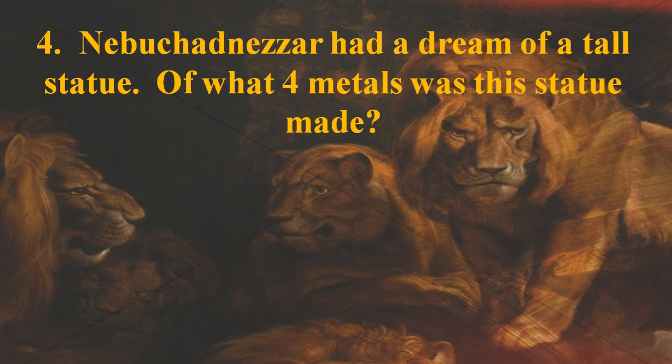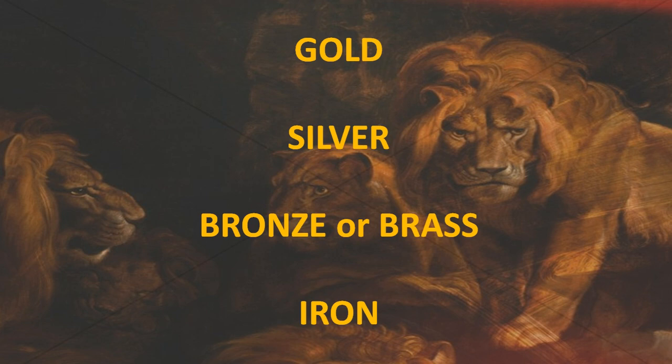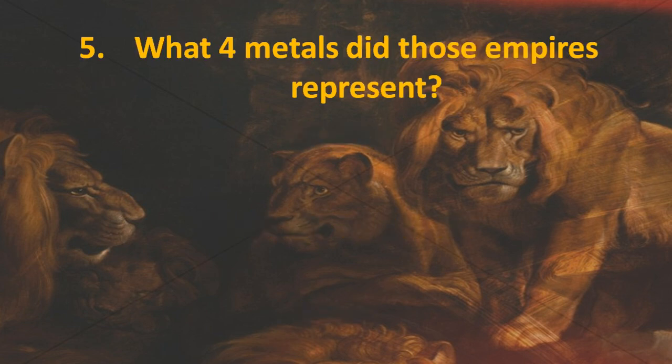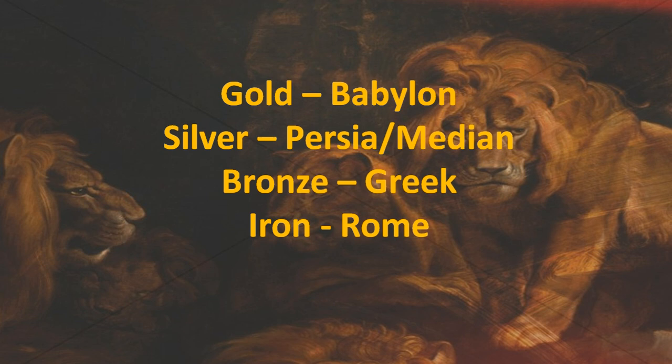Number four: Nebuchadnezzar had a dream of a tall statue. Of what four metals was this statue made? Gold, silver, bronze (or brass would be acceptable), and iron. And a follow-up question: what four empires did those metals represent? The gold was Babylon, silver the Persian-Median empire, the bronze was the Greek, and iron was Rome.